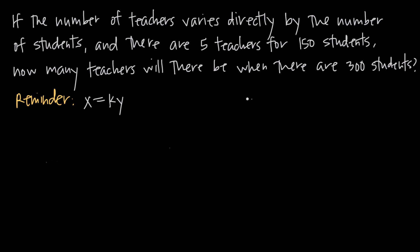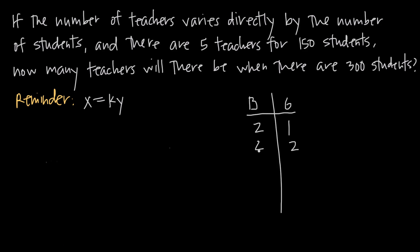A simple example: boys and girls in a classroom. Let's say there are always twice the number of boys as there are girls — for every girl there are two boys. So if there's one girl, there are two boys; two girls, four boys; three girls, six boys. You just take the number of girls and double it to get the number of boys.